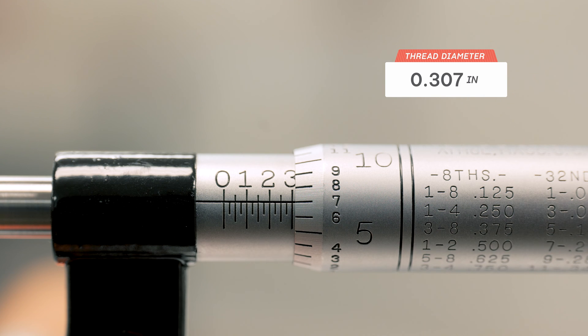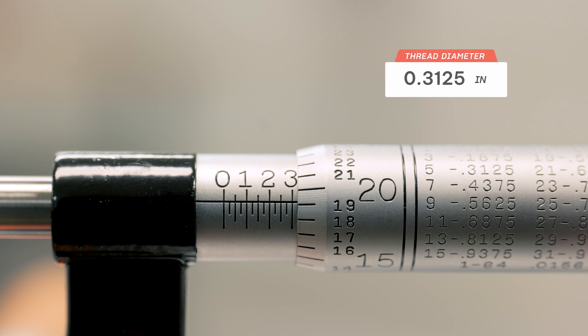And since I know that threads typically run just a little bit smaller than nominal size, the next fractional size up would be five sixteenths or .3125. So I know this is a five sixteenths bolt.